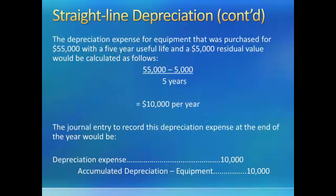We have an example. We want to calculate the depreciation expense for an asset that was purchased for $55,000 with a five-year useful life and a $5,000 residual value. The cost of the asset, $55,000, minus the $5,000 residual value, divided by the five-year useful life, gives us depreciation expense of $10,000 per year over the entire useful life. Our journal entry would be a debit to depreciation expense and a credit to accumulated depreciation of $10,000.